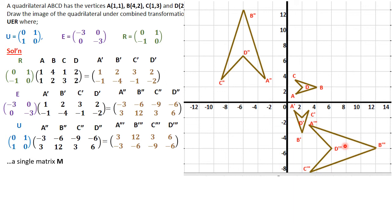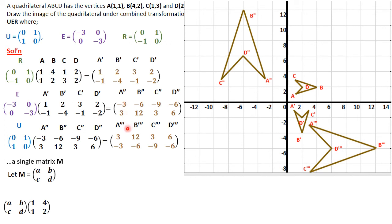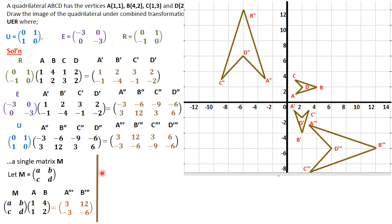Now we need to get a single matrix M that represents all three matrices R, E, and U. Let matrix M be [A,B; C,D]. Pre-multiplying any coordinates of the quadrilateral by M should give us the corresponding image in the final transformation. I've picked points A and B from the given quadrilateral, and that should equal the coordinates of A''' and B''', which are (3,-3) and (12,-6) respectively.